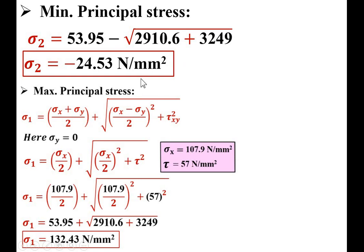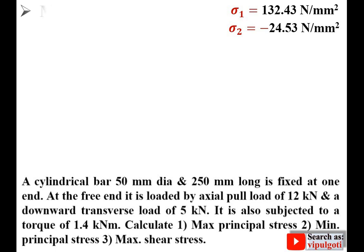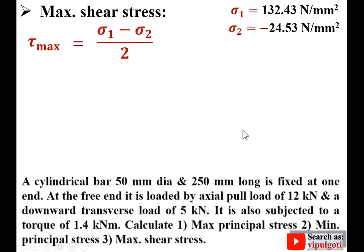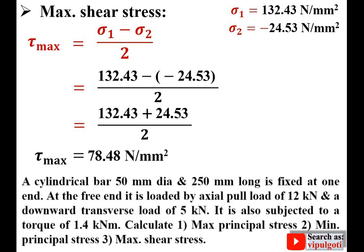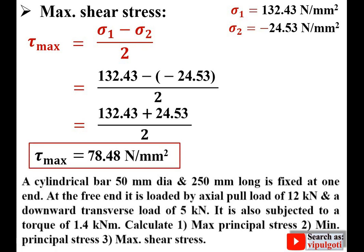Third: maximum shear stress. Using τmax = (σ1 − σ2) / 2. Substituting σ1 = 132.43 and σ2 = −24.53: τmax = (132.43 − (−24.53)) / 2. Note that minus minus equals plus, so simplifying gives τmax = 78.48 N/mm². This is the third answer — maximum shear stress. Thanks, friends. Press the like button to appreciate this video.